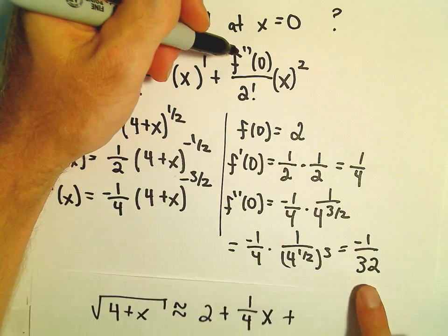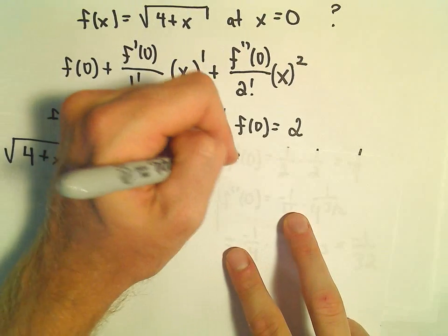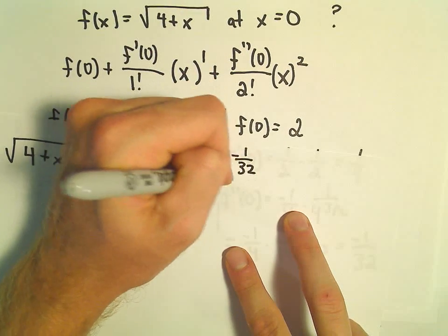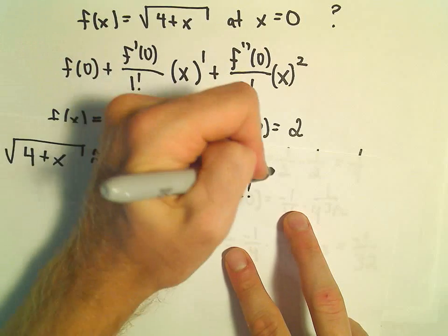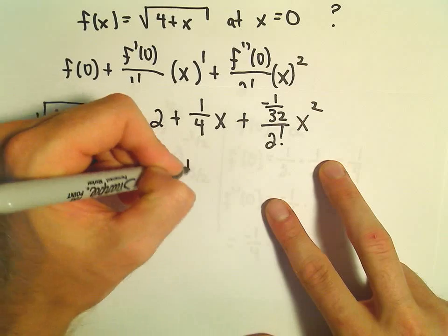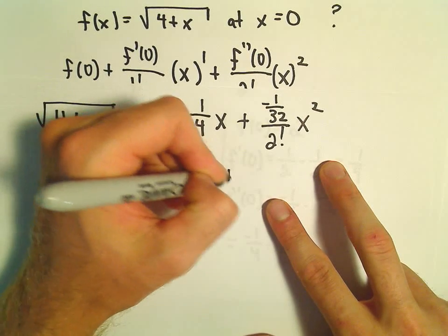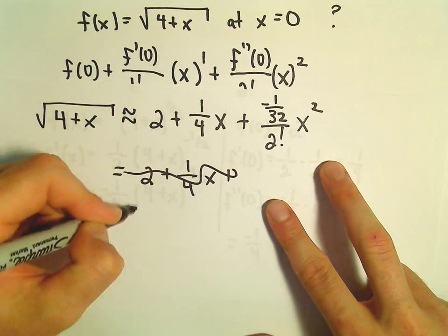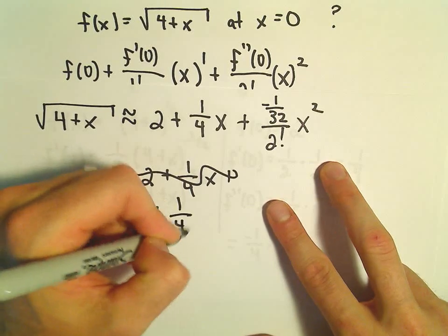Let's see, f double prime of 0, that's negative 1 over 32. That's over 2 factorial times x squared. But now we've done all the hard work. So we've got 2 plus 1 fourth x. Whoops, let's stick our minus sign in there.